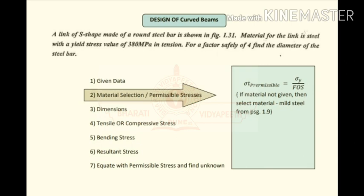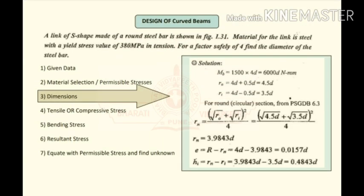For material selection: if the material is not given, we select mild steel from PSG page 1.9. If the material is given, as in this problem, we just find the permissible stresses. Using failure theories, sigma_t permissible = yield stress / factor of safety. The yield stress and factor of safety of 4 are given, so we can calculate sigma_t permissible.